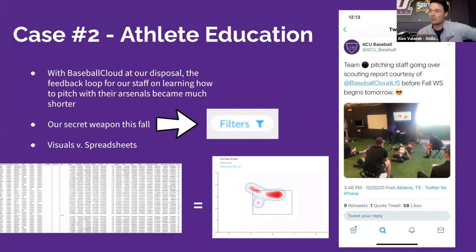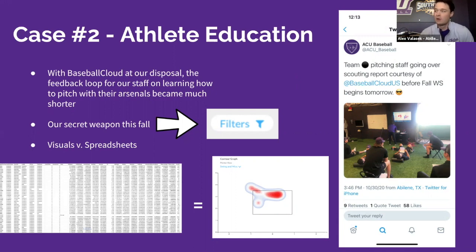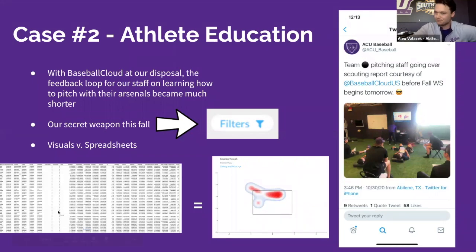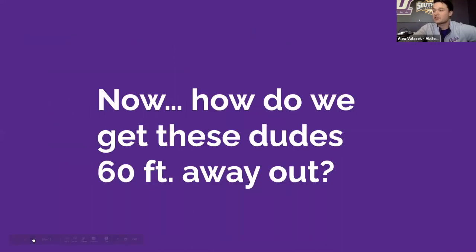With all the visuals from Baseball Cloud, it makes it easy to show our guys what's actually going on with their arsenals. The CSV at the beginning tells you exactly the same thing as the contour graph on the right, but ten times out of ten that contour graph is going to make way more sense to the athlete. Our secret weapon this fall was the filters — being able to filter by pitch type, lefty-righty splits, counts — really allowed us to dive deep and find where our guys have advantages and identify the lowest-hanging fruit for the spring.